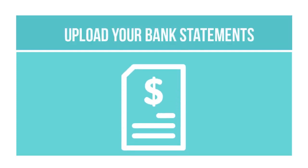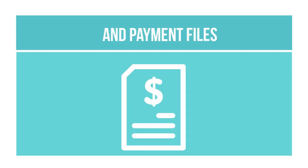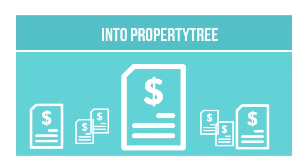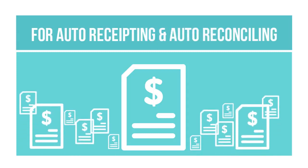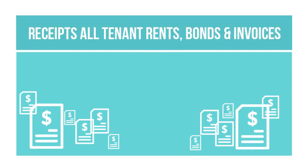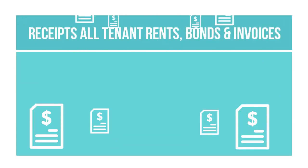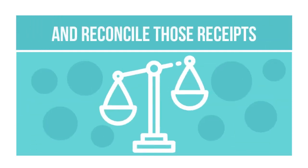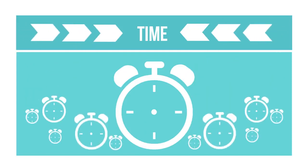The tenant download feature allows you to upload your bank statements and payment files from third-party payment providers into Property Tree for automatic receipting and automatic reconciling of tenant payments. Tenant download will essentially receipt all of your tenants' rent, bond, and invoices for you and reconcile those receipts, saving you heaps of time.